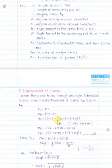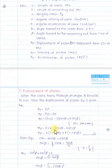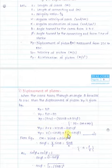Substituting into the displacement equation: xp = P1O − PO = (l + r) − (r·cos(theta) + l·cos(phi)). Simplifying: xp = r(1 − cos(theta)) + l(1 − cos(phi)). This is the equation in terms of theta and phi. However, since we don't know phi, we need to find the relation between theta and phi.